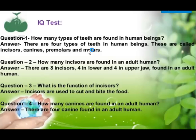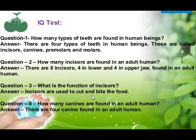How many incisors are found in an adult human? There are eight incisors — four in the lower and four in the upper jaw. What is the function of incisors? Incisors are used to cut and bite the food. That is why they are also known as cutting or biting teeth.